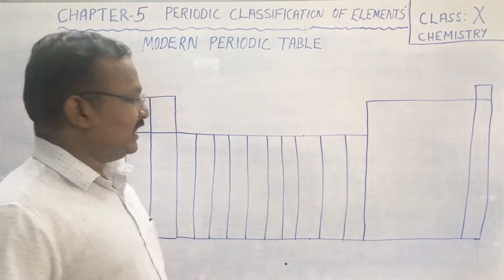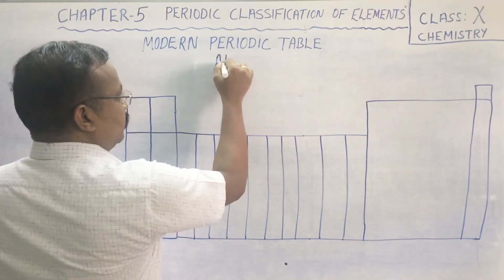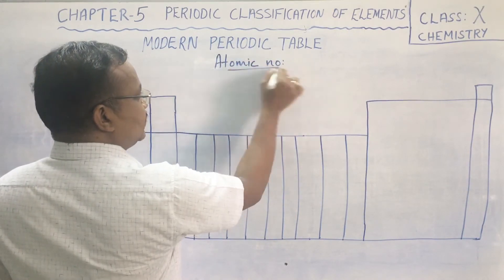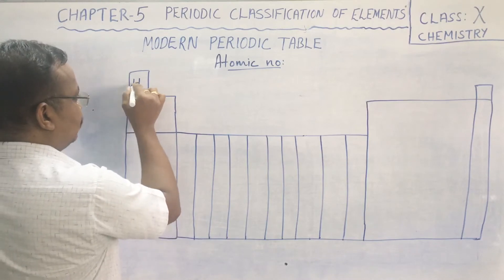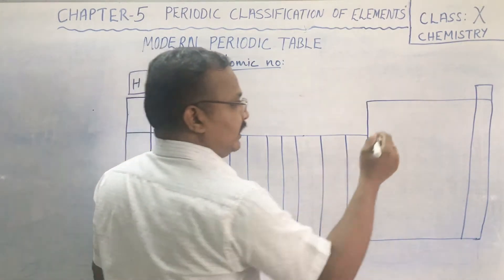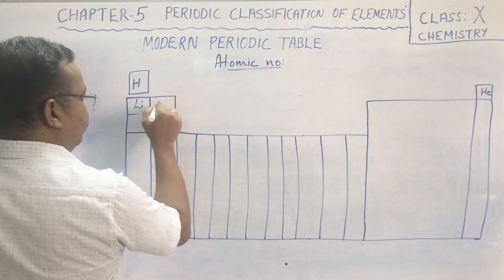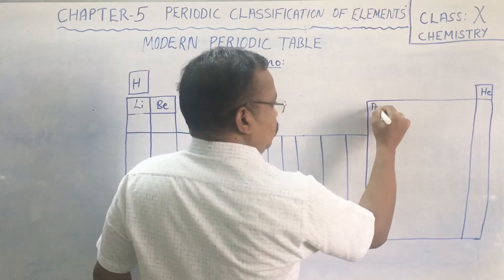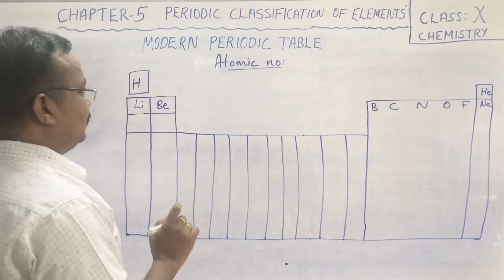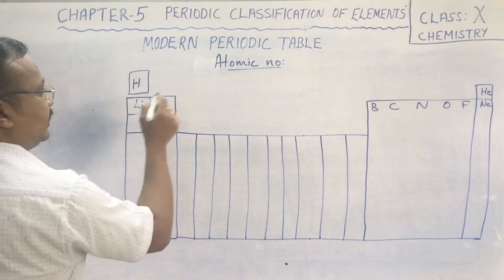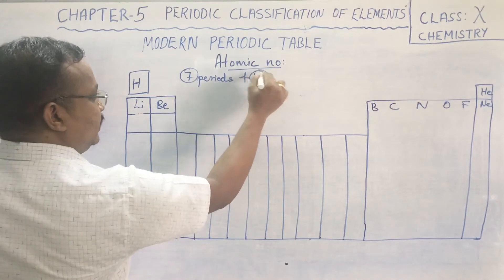Here I have made a small outline of the modern periodic table. The modern periodic table is based on the increasing order of atomic numbers. An important thing to remember: the modern periodic table has seven periods and eighteen groups.